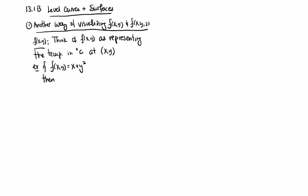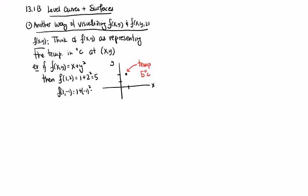We could think of it as: f(1,2) = 1 + 2² = 5, so at the point (1,2), the temperature is 5 degrees Celsius. And if we plug in a different point, say f(1,-1) = 1 + (-1)² = 2, so at the point (1,-1), the temperature would be 2 degrees.